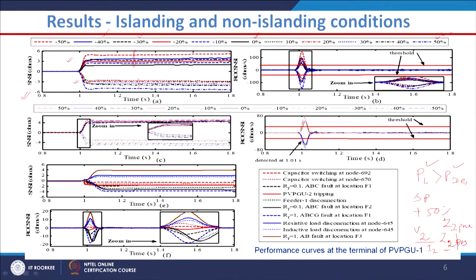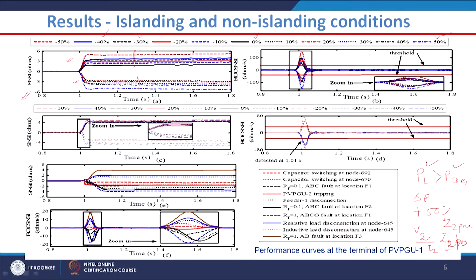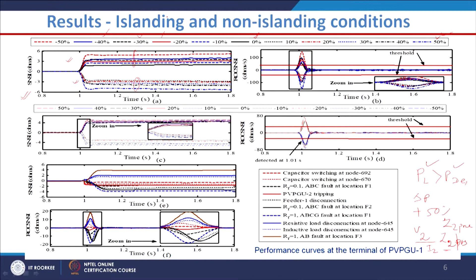Conversely, for negative power mismatch, Z2_post is expected to be greater than Z2_pre, and that is why all those cases lie in the positive direction. This analysis is based on the negative sequence part of active and reactive power.